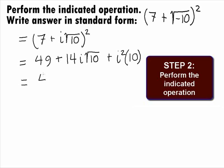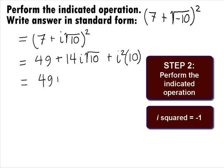We can replace that i squared with a negative 1 and this will give us 49 plus 14i square root of 10 plus negative 1 times 10.